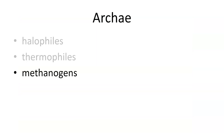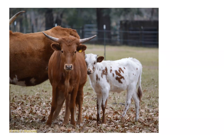We also have the methanogens. The methanogens are those organisms that generate methane. Methane is created by these archaea and is often found in the digestive system of animals. These organisms tend to generate methane, and methane is one of the more significant greenhouse gases that we have. Everybody who has a digestive system generates, to some extent, some sort of methane.